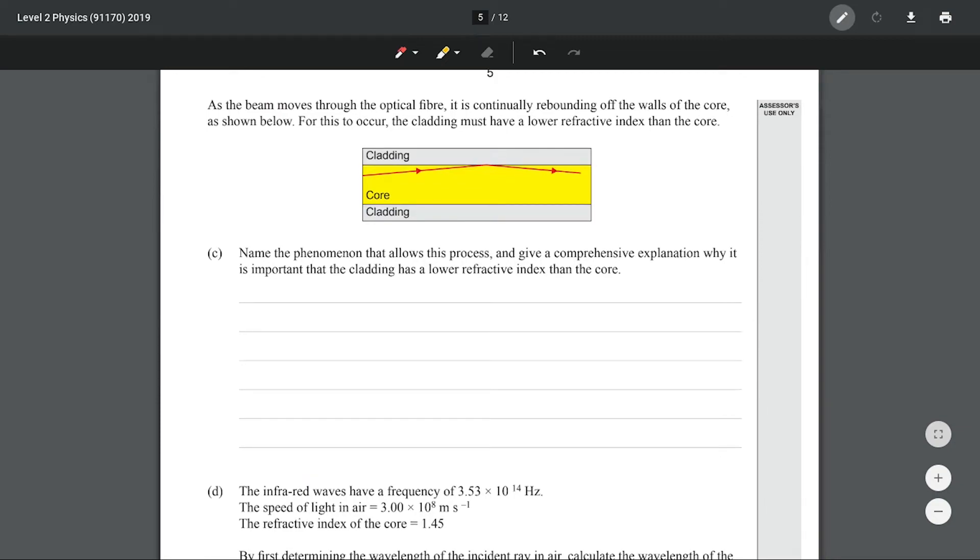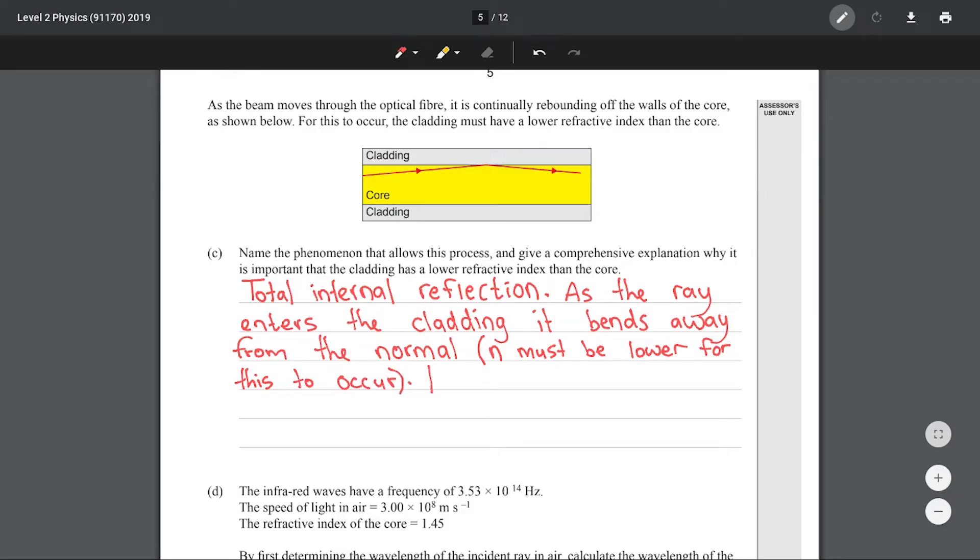As the beam moves through the optical fiber it is continually rebounding off the walls of the core. For this to occur the cladding must have a lower refractive index than the core. Name the phenomenon that allows this process. This is almost a carbon copy of the previous question where it wants us to talk about total internal reflection. As the ray enters the cladding it bends away from the normal. n must be lower for this to occur. If the incident angle is greater than the critical angle, the ray will totally internally reflect back into the core.